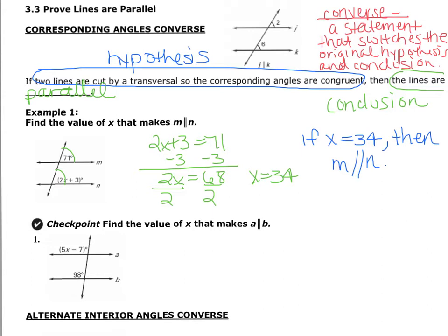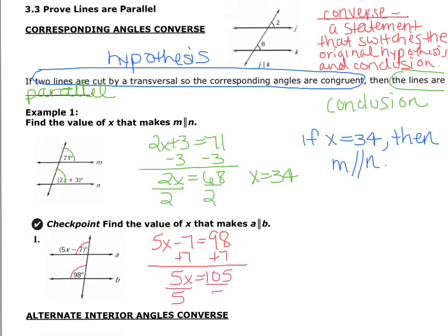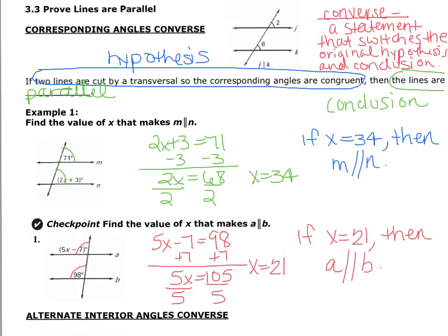To make line A parallel to line B, first identify the angles — there's this angle and the one that's 98 degrees. Those are corresponding angles because they're in the same position but at a different location. Set the expression equal to that measurement and solve: add 7 to both sides, so 5X equals 105, divide by 5, and X equals 21. If and only if X is 21, then line A is parallel to line B.